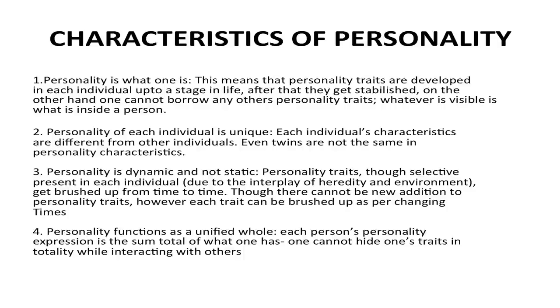What are the characteristics of personality? Number 1: personality is what one is. This means that personality traits are developed in each individual up to a stage in life, after which they get stabilized. One cannot borrow another's personality traits — whatever is visible is what is inside a person. Number 2: personality of each individual is unique; even identical twins are not the same in personality characters.